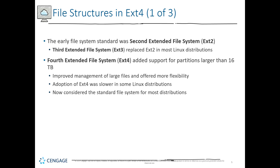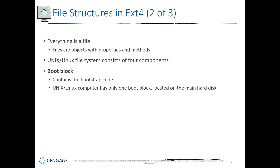So when we say 'file,' what exactly does that mean? In Linux, everything is a file. Every object has properties and has a method — so a folder is a file, a data file is a file. Everything is a file. The Linux file system consists of four main components.